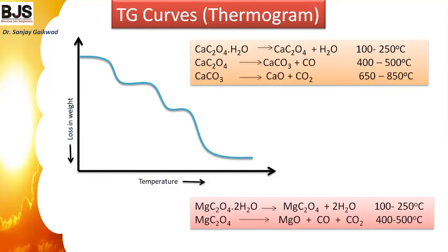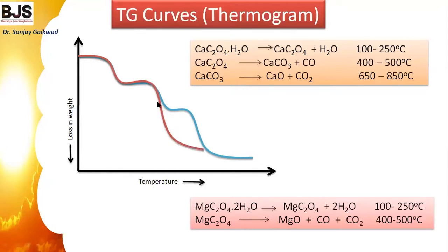Similarly, for magnesium oxalate, the same type of graph is observed. Initially, water molecules are removed, then carbon monoxide and carbon dioxide are simultaneously removed. The pyrolysis curve then remains constant for magnesium oxide after about 500 degrees Celsius. In this way, we can study thermal reactions and their mechanisms.